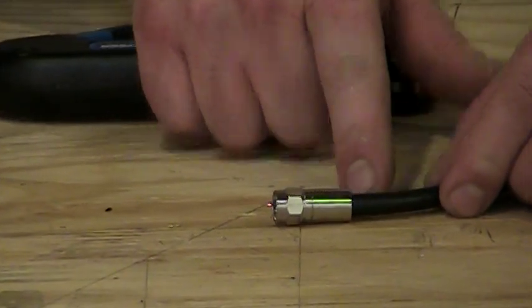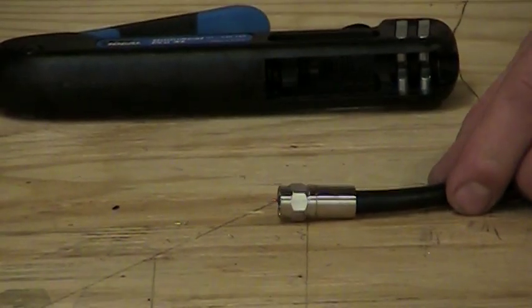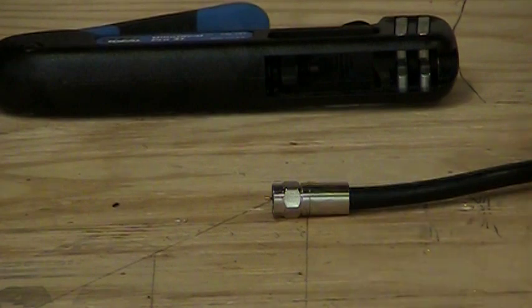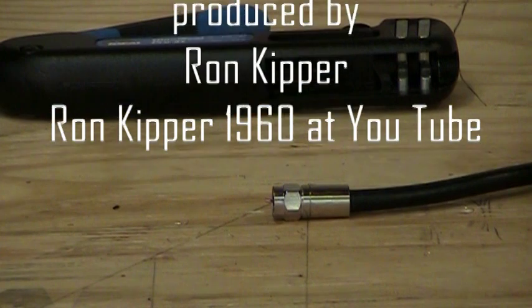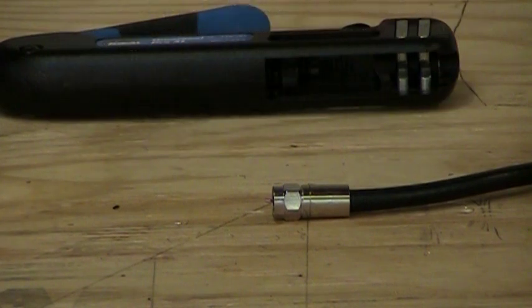Now that is a properly compressed RG6 quad connector on the end of RG6 quad wire. With quad, we always take out that outer layer of foil in order to get it on right.